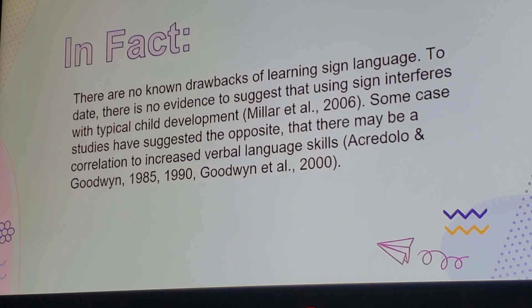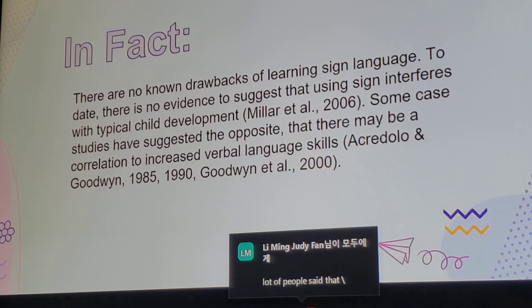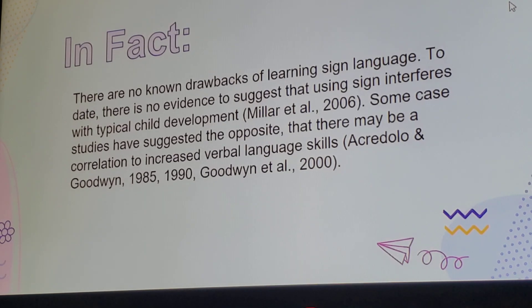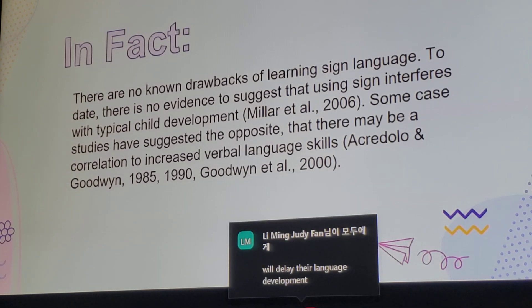Around seven to eight months, her daughter would sign 'more' with her hands, and sign 'please' — just simple signs like 'water.' Not complex, two or three syllable things, just plain and simple. She was able to communicate through signing at seven to eight months.